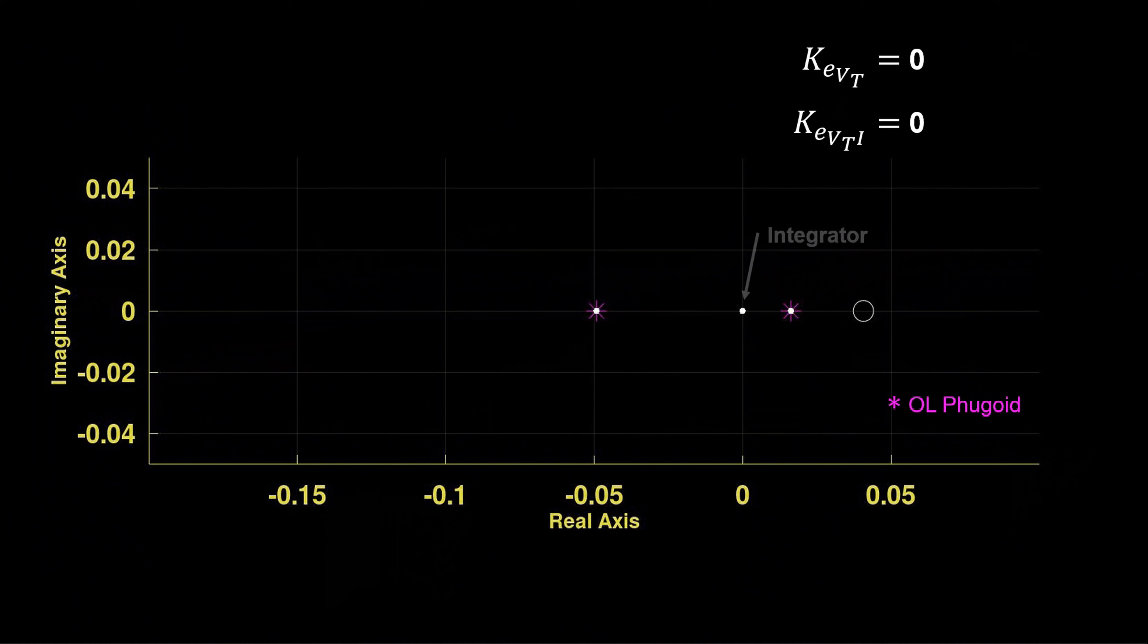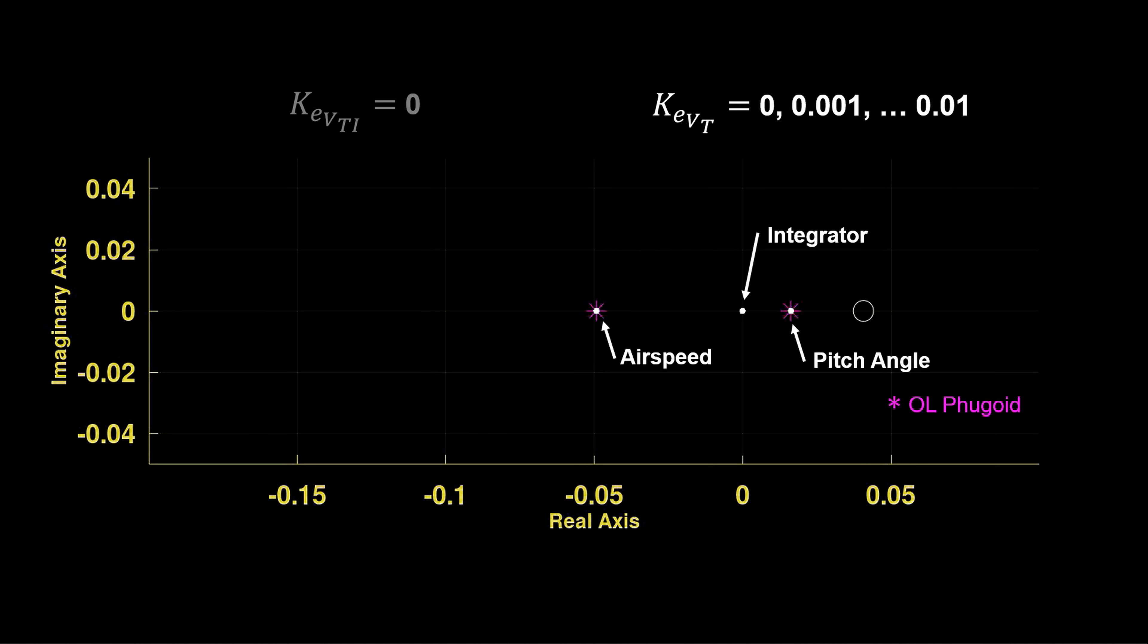The integrator is a new pole from the controller. It has a value of zero since the integral air gain is zero. We also see the airspeed and the pitch pole. Now when tuning a controller, we often start with the innermost loop and work outward. So the innermost loop here, the proportional feedback loop, is going to be tuned. Watch what happens as the proportional gain increases.